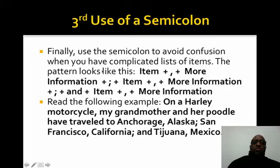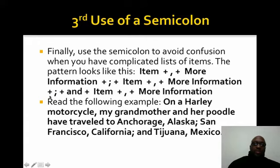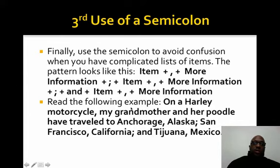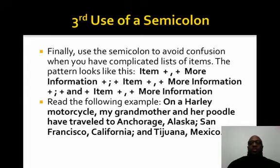The third use: use the semicolon to avoid confusion when you have complicated lists of items. The pattern is: item, comma, more information, semicolon, item, comma, more information, semicolon, item, comma, more information. For example: 'On a Harley motorcycle, my grandmother and her poodle have traveled to Anchorage, Alaska; San Francisco, California; and Tijuana, Mexico.' The semicolon separates complicated lists — when you have a city and a state, you use a semicolon to separate the next set of cities and states.